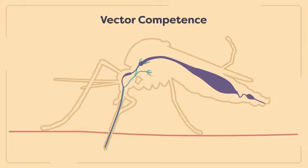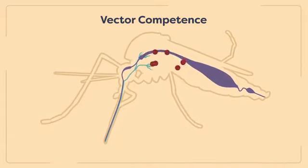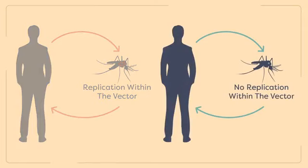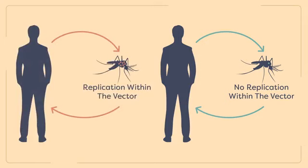Vector competence is the vector's ability to acquire, maintain, and transmit the disease-causing organism in question. Some disease-causing agents can even replicate or continue development within the arthropod vector, though this is not required for vector competence. Other disease-causing agents are simply acquired, carried, and transmitted by the arthropod vector. In either case, arthropod disease vectors must have high vector competence to be effective at disease transmission. Even if an arthropod picks up a pathogen during feeding, it may not be able to transmit it to another host. There are barriers to vector competence that can occur at any of the stages of pathogen acquisition, maintenance, or transmission. For example, maintenance of the disease-causing organism will be interrupted if it is attacked by the vector's immune system, resulting in low vector competence.